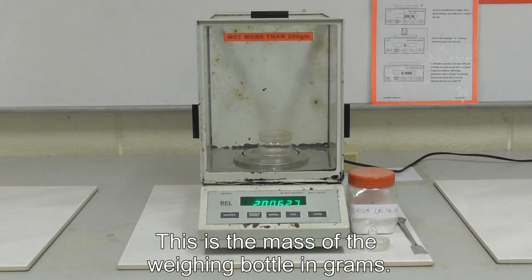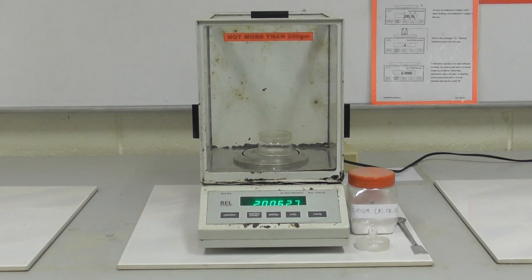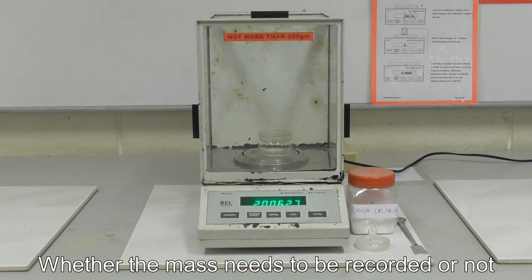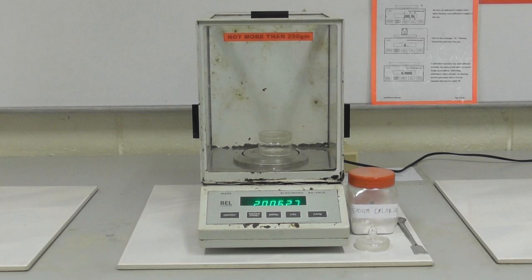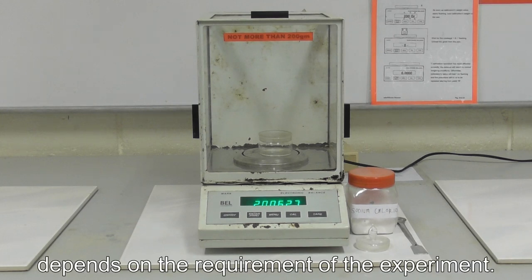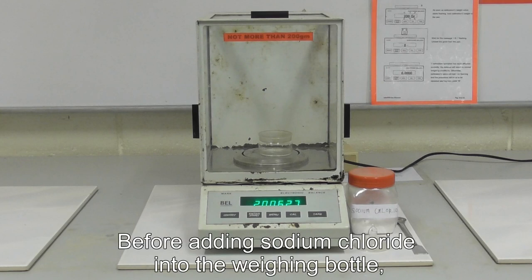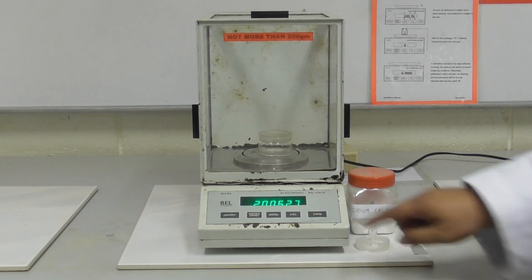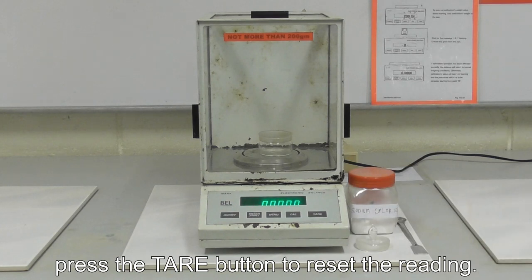This is the mass of the weighing bottle in grams. Whether the mass needs to be recorded or not depends on the requirement of the experiment. Before adding sodium chloride into the weighing bottle, press the tear button to reset the reading.